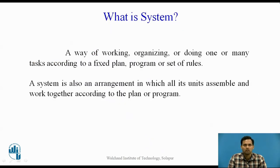What is a system? A system is a way of working, organizing, or doing one or many tasks according to a fixed plan, program, or set of rules. A system is also an arrangement in which all its units are assembled and work together according to a plan or program. Generally, a system is a well-structured or well-organized task which runs according to a fixed plan or set of rules.